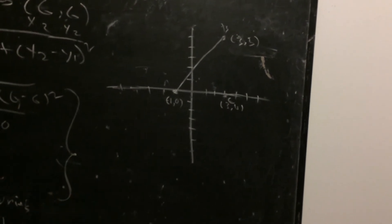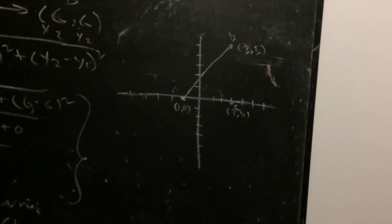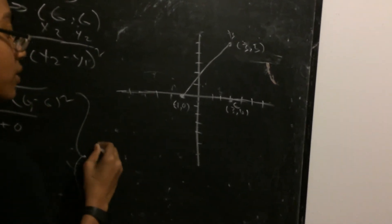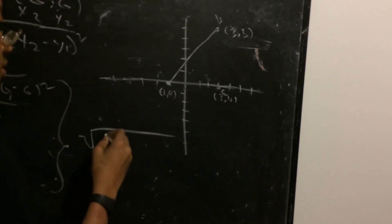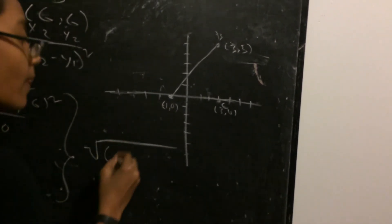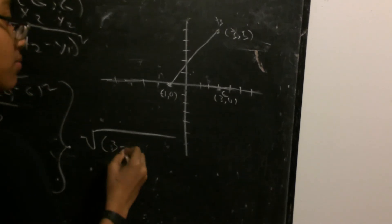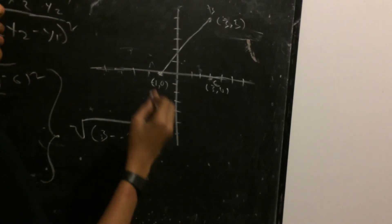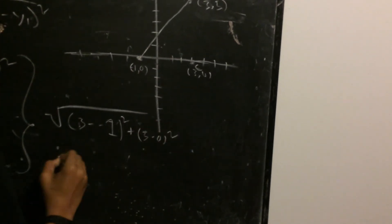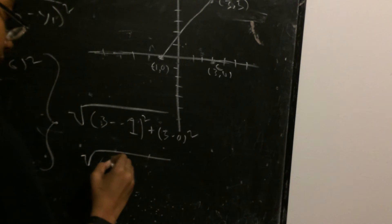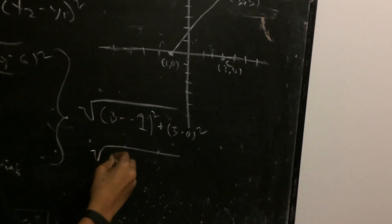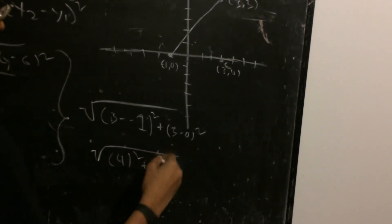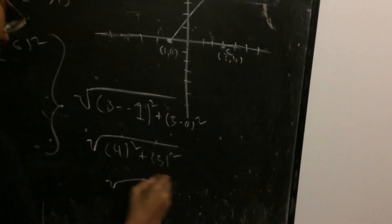But we could check it another way using the midpoint formula. So if you use the distance formula right here it comes out to 3 minus negative 1 squared plus 5 minus 0 squared. So that's 3 minus negative 1 is 3 plus 1, so 3 plus 1 is 4 squared plus 5 minus 0 is 5 squared.